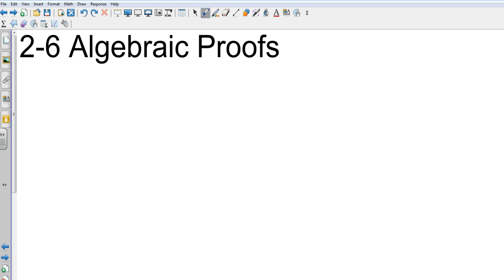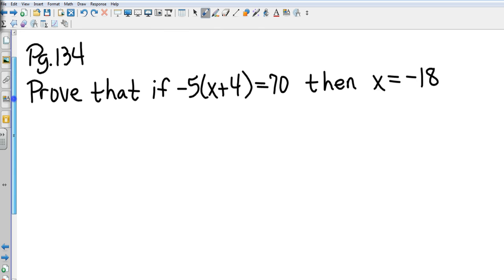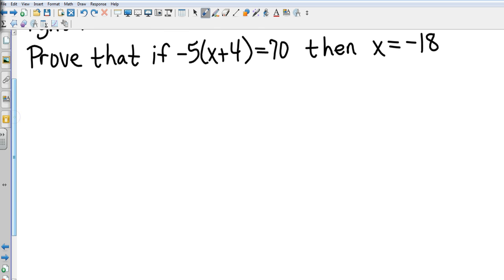I'm going to start off with the very first example on page 134. We have: prove that if negative 5 times (x plus 4) equals 70, then x equals negative 18. Again, an if-then conditional statement, so we're going to prove this step by step.